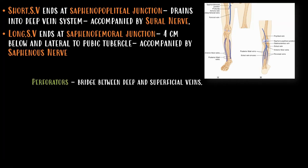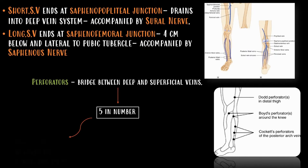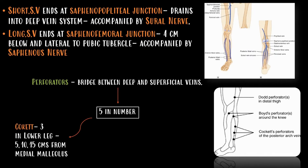There are perforators which form a bridge between the deep and the superficial veins. These perforators are five in number. The first three are the Cockett perforators, which are present in the lower leg at 5, 10, and 15 centimeters from the medial malleolus. The Boyd perforator is present below the knee and the Dodd perforator is present in the thigh.